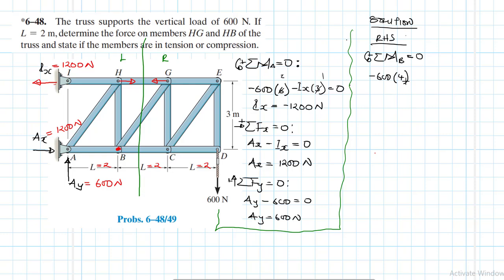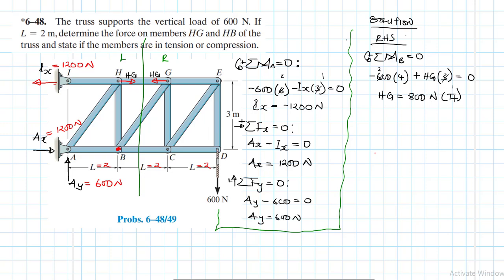We also have HG giving an anticlockwise moment, with lever arm of 3. No other forces at that point. So: 600 × 4 − HG × 3 = 0, giving 800 = HG × 3... rearranging: HG = 800 Newtons, and this member is in tension.